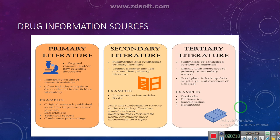The secondary literature is a summary that synthesizes primary literature — essentially review articles of research papers. The tertiary literature is the condensed or summary version of the material, drawn from both primary and secondary sources. It is the most authentic resource for drug information and includes textbooks, dictionaries, encyclopedias, handbooks, software, Medscape, Lexicomp, etc.